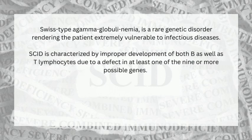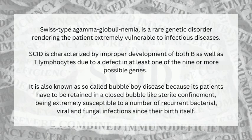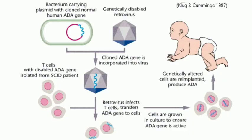SCID is characterized by improper development of both B as well as T lymphocytes, due to a defect in at least one of nine or more possible genes. It is also known as 'Bubble Boy disease' because its patients have to be retained in a closed, bubble-like sterile confinement, being extremely susceptible to a number of recurrent bacterial, viral, and fungal infections since birth.